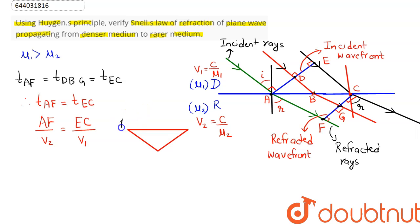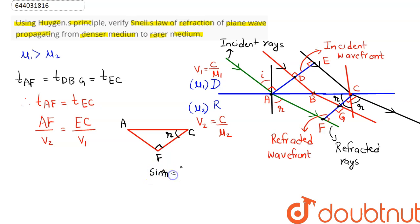From the geometry, consider triangle AFC where point A, point F, and point C are the vertices and the angle at F is 90 degrees. If this angle at C is r, then the angle at A will be 90 minus r, and the remaining angle works out to r. Applying trigonometry to this triangle, sine of r equals AF divided by AC, so AF equals AC times sine r.